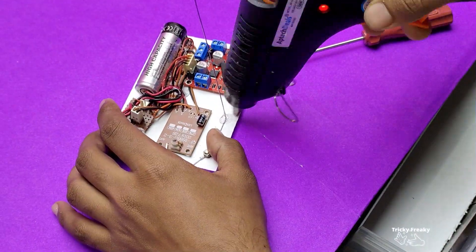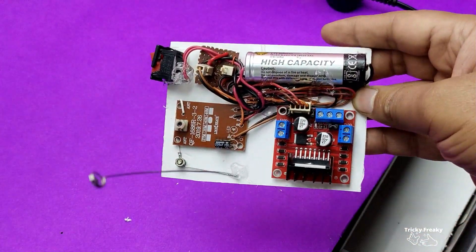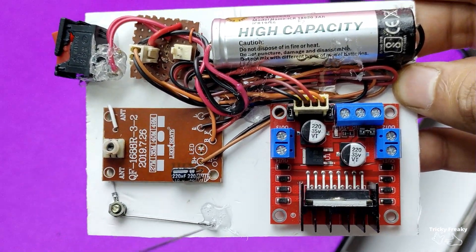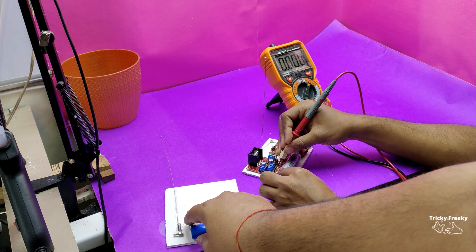There you go. Your receiver circuit is ready. Let's first test the transmitter and receiver with a multimeter to check if each pin has a voltage close to four volts.